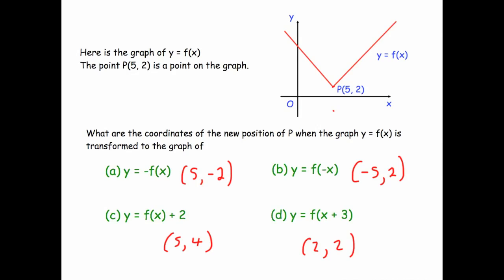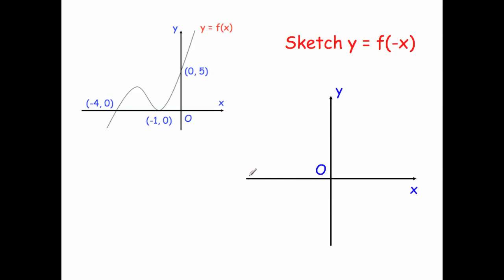Now let's look at another type of question where we actually sketch the graphs. We have y equals f of x, which is a cubic graph. It has three key points: (-4, 0), (-1, 0), and (0, 5). For each transformation, I'll identify where those three key points move to and then draw the graph.